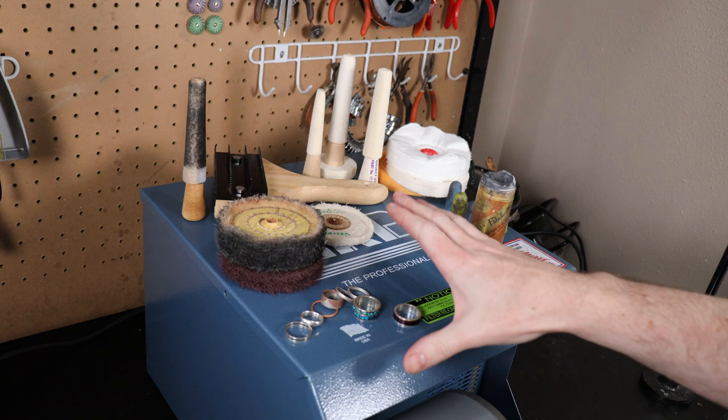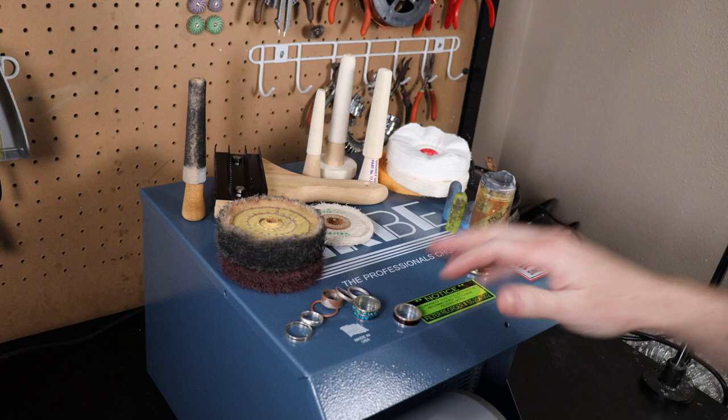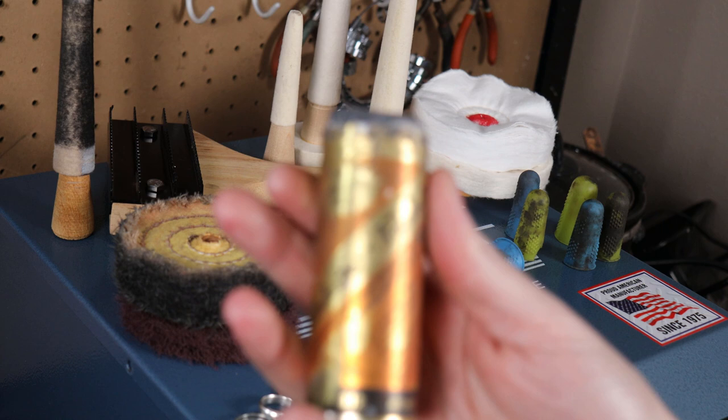One other thing you might have noticed is all the stuff I have on top here. None of this comes with either one of the polishing machines and you're going to have to pick and choose the things that you need or want. You're going to need a polishing compound and this is the one that I like to use.